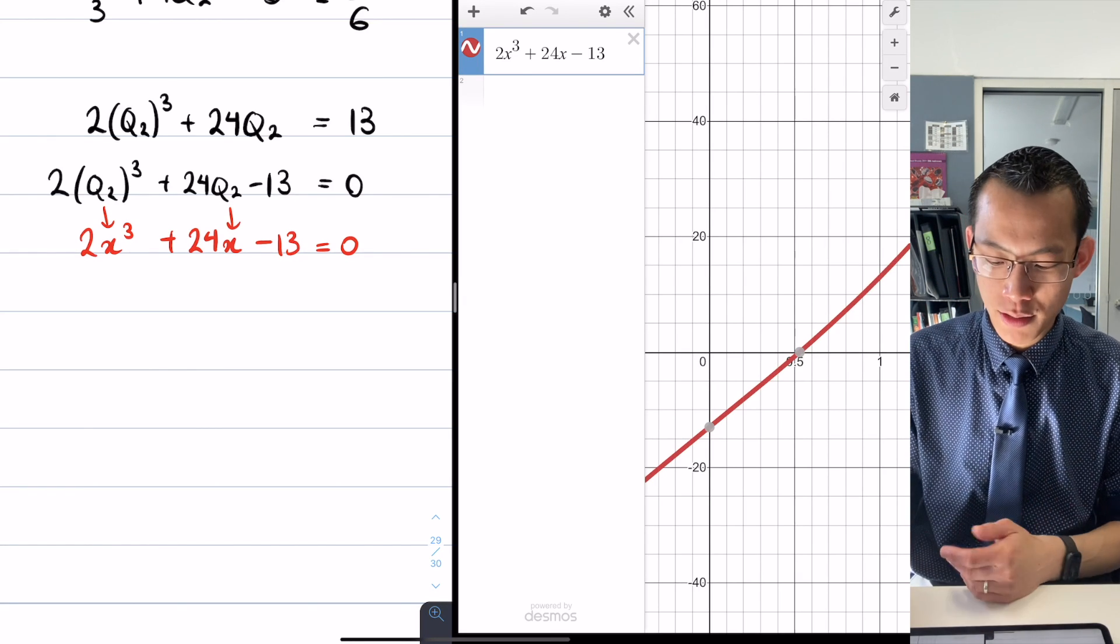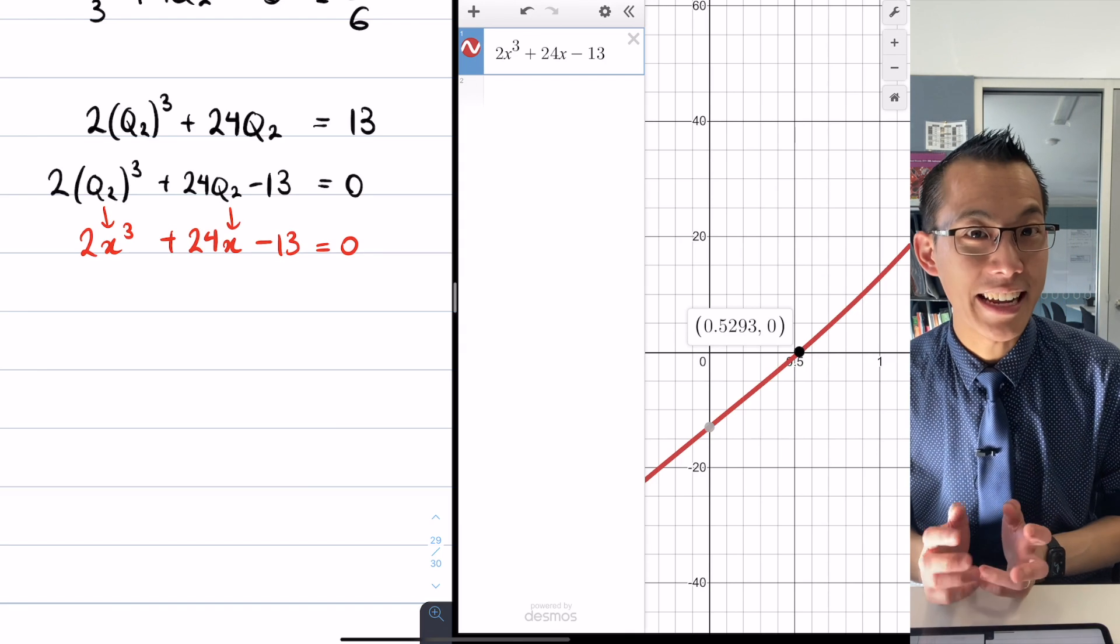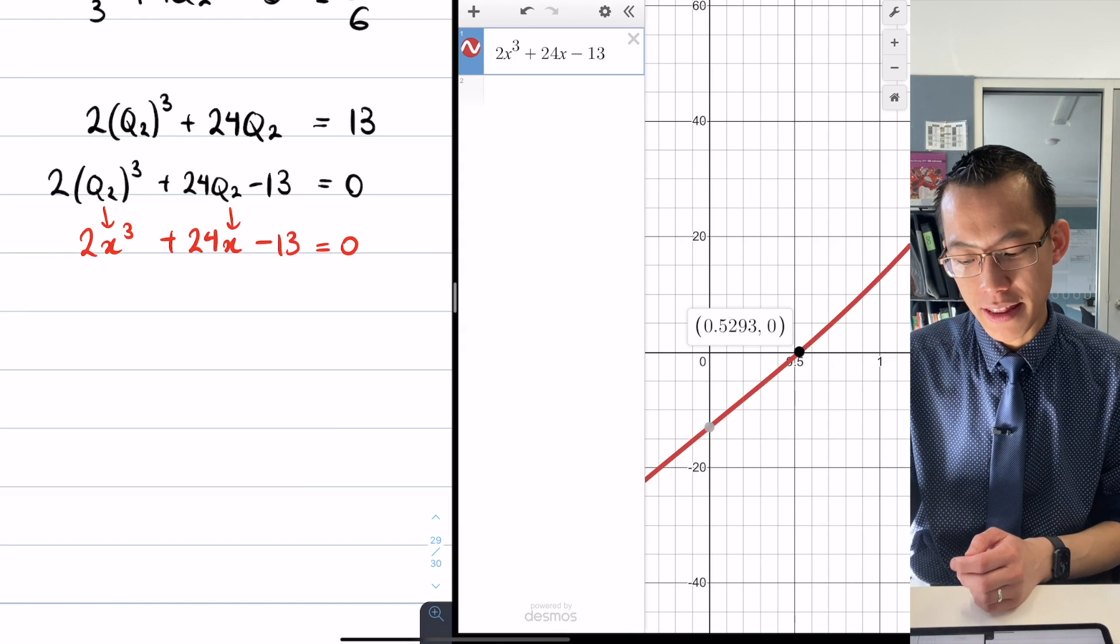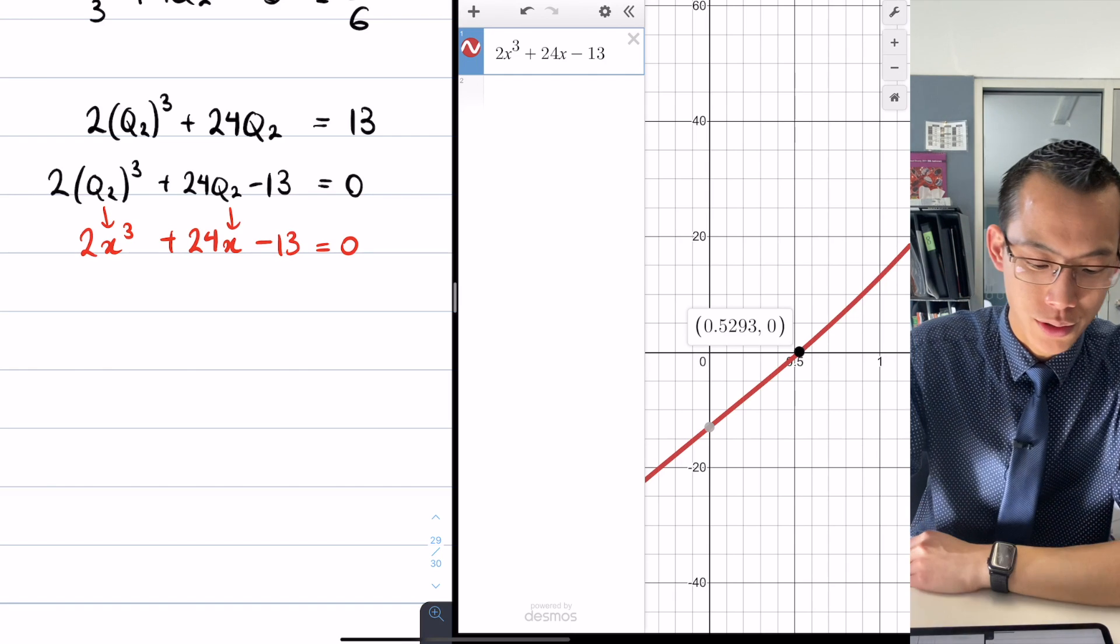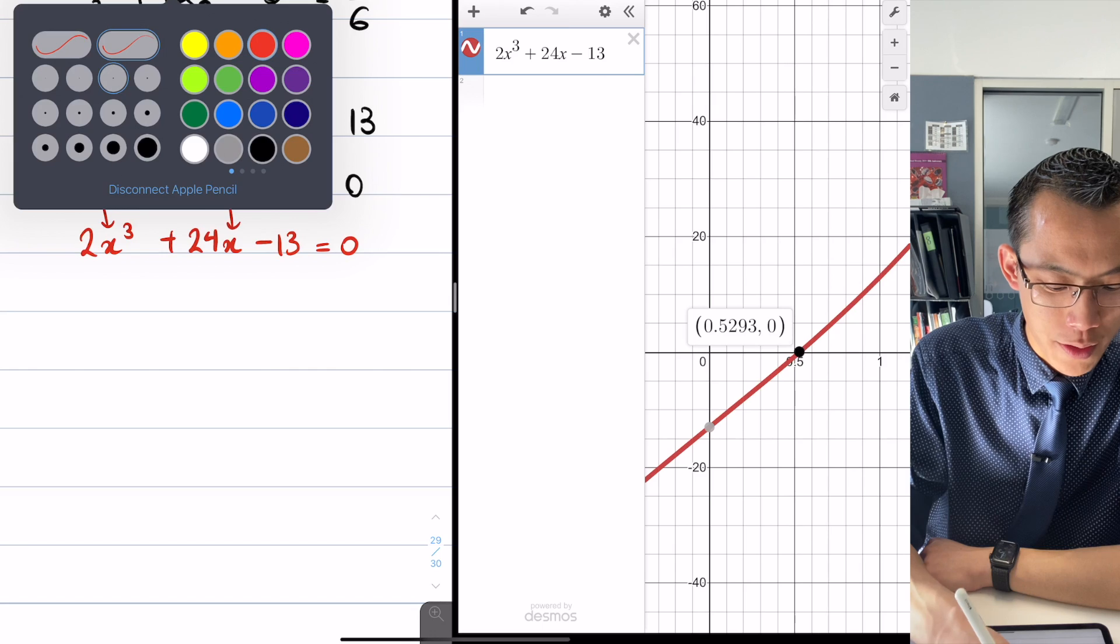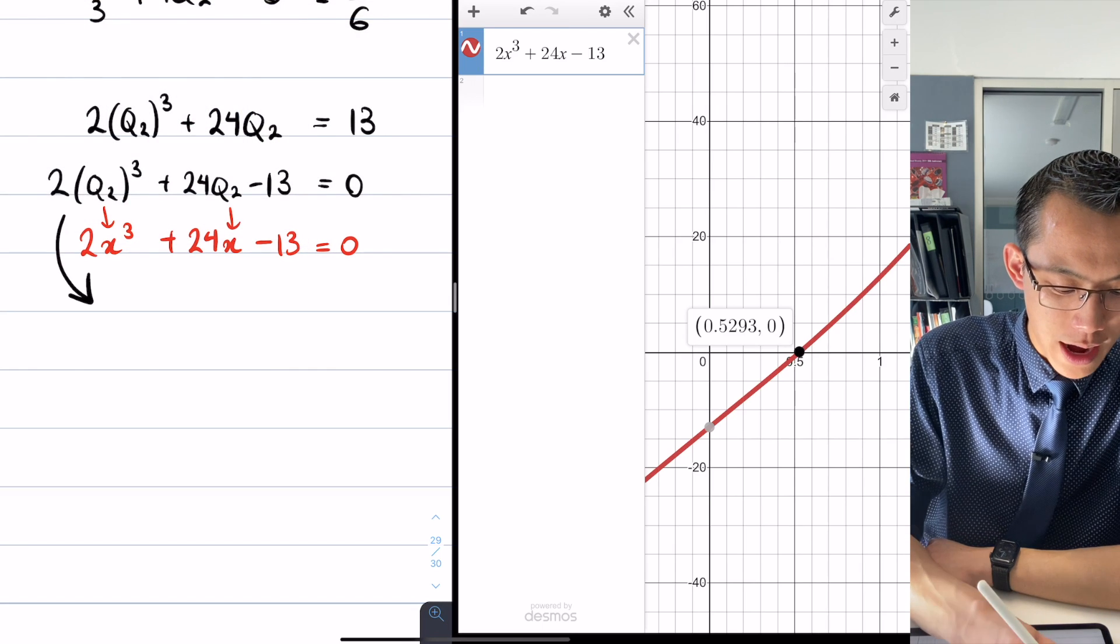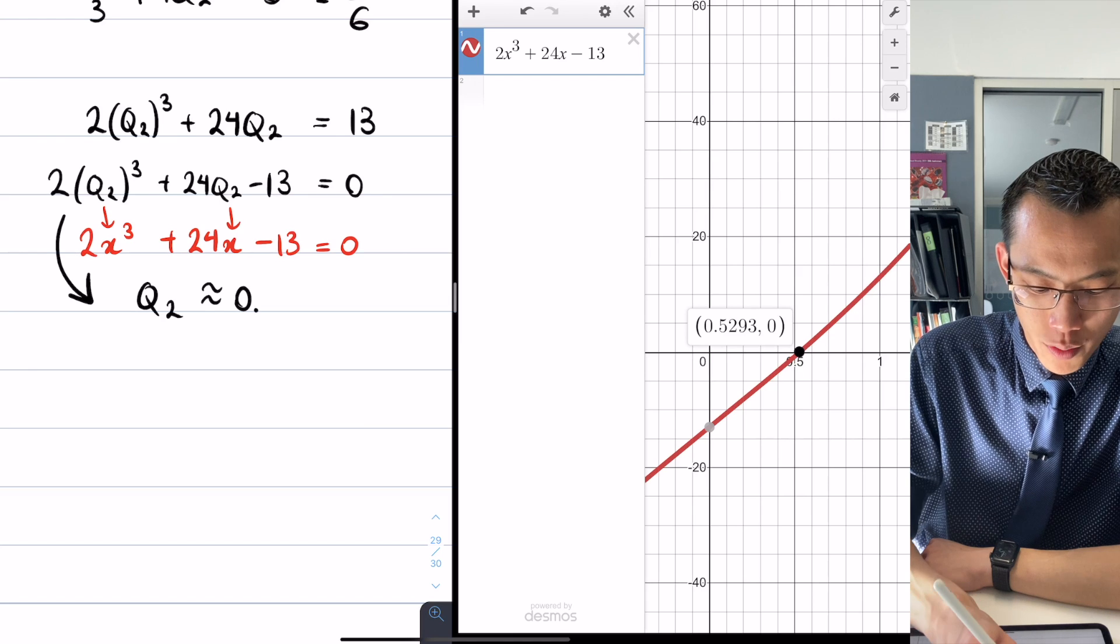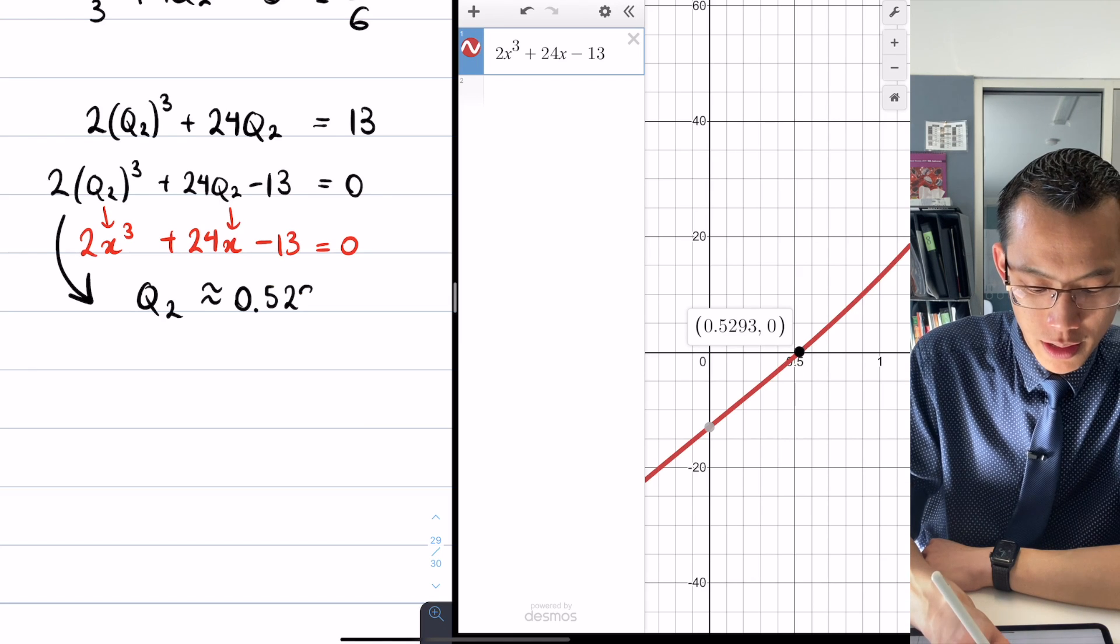If I click on it I get a coordinate, so it's 0.5293, and then the other part is the 0 that I'm equal to. So what I can say here is that Q2 is approximately 0.5293.